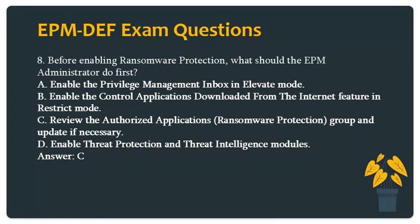Question 8. Before enabling Ransomware Protection, what should the EPM Administrator do first? a. Enable the Privilege Management Inbox in Elevate mode. b. Enable the Control Applications downloaded from the Internet feature in Restrict mode. c. Review the Authorized Applications, Ransomware Protection Group and update if necessary. d. Enable Threat Protection and Threat Intelligence Modules. Answer c.